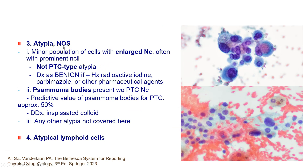We also have atypia NOS — not otherwise specified — where there is a minor population of cells with some degree of nuclear atypia, but this is not the PTC type of atypia with chromatin pallor or grooves; rather it is enlargement and sometimes mild hyperchromasia. This change is often seen in patients with Graves' disease treated with carbimazole or radioactive iodine. If that history is available, it is usually diagnosed as benign; if not, it falls into atypia NOS. Psammoma bodies without nuclear features of papillary thyroid carcinoma also go into atypia NOS.